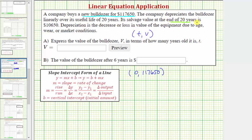And then after 20 years, the value is $10,650. This would be the ordered pair 20 comma 10,650.